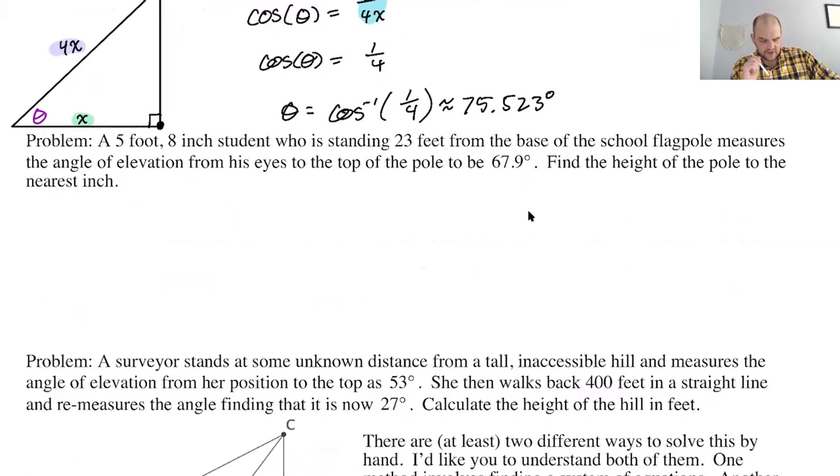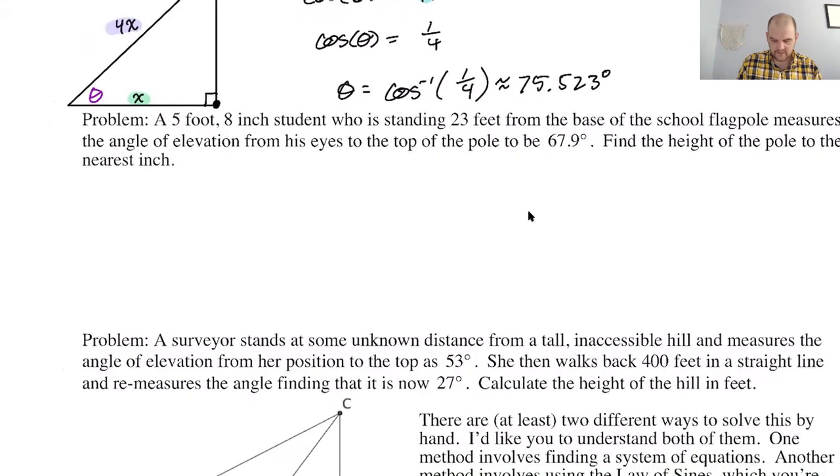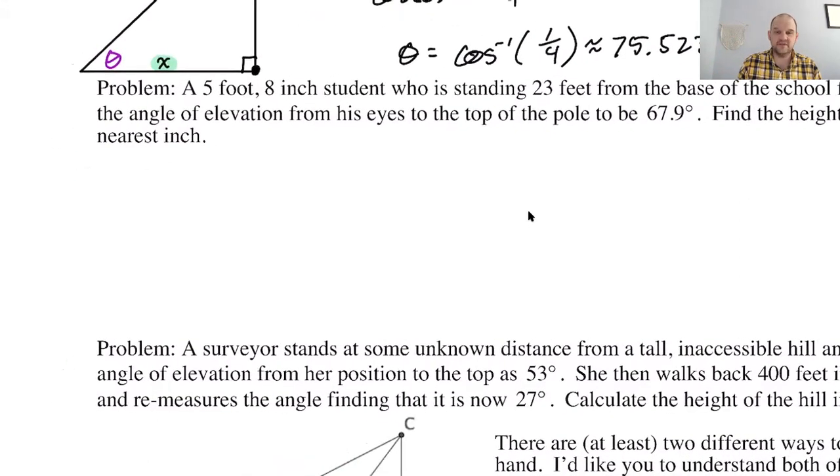A five foot eight inch student who is standing 23 feet from the base of the school flagpole measures the angle of elevation from his eyes to the top of the pole to be 67.9 degrees. Okay, so we definitely need to draw a picture. Find the height of the pole to the nearest inch. It's kind of an issue in this problem. At least I think so. The issue for me is that for humans, your eyes aren't at the top of your head.